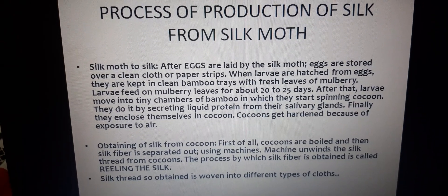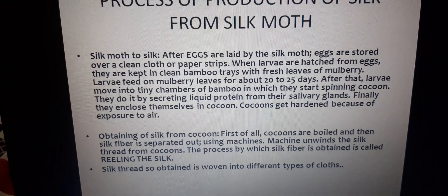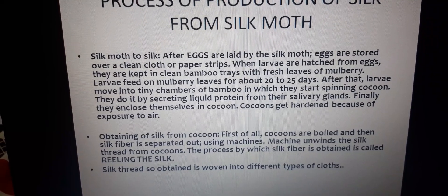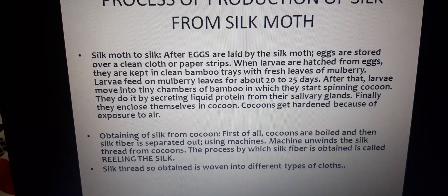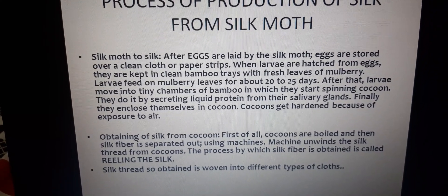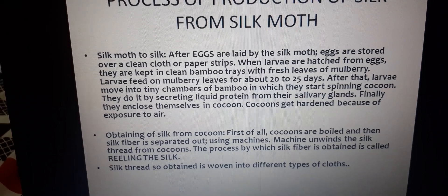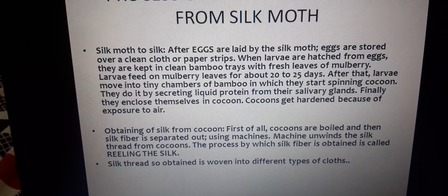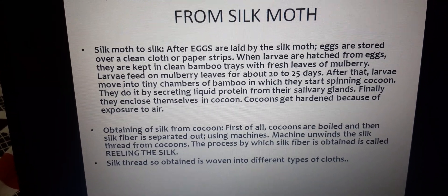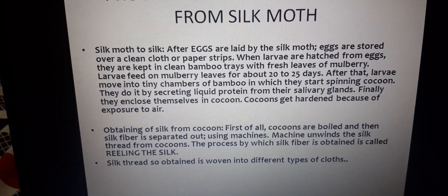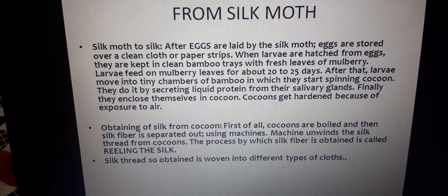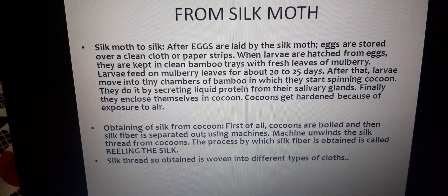Now let us see how silk is produced from silk moth. The eggs are laid by the silk moth and stored over clean cloth or paper strips. When larva or caterpillar hatch from the eggs, they are kept in clean bamboo trays with fresh mulberry leaves. The larva eats mulberry leaves for about 20 to 25 days. After that, they are moved into tiny chambers made from bamboo where they start spinning the cocoon by secreting liquid protein from their salivary glands, knotting their head in the shape of eight. This liquid protein solidifies on exposure to air and forms the cocoon.